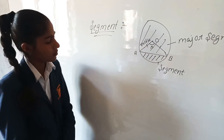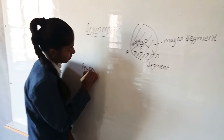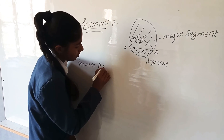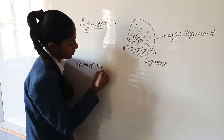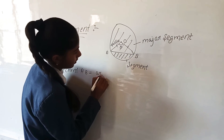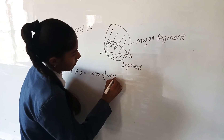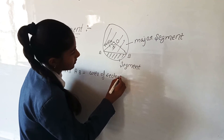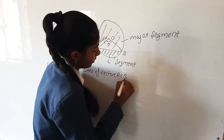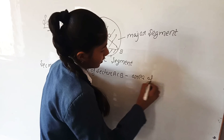The area of a segment ACB is equal to the area of the sector ACB minus the area of triangle AOB.